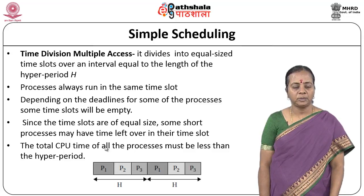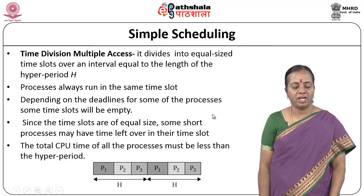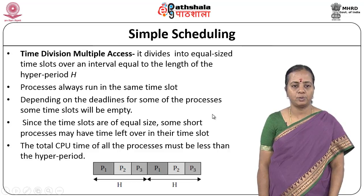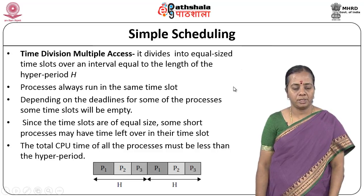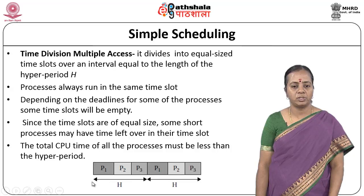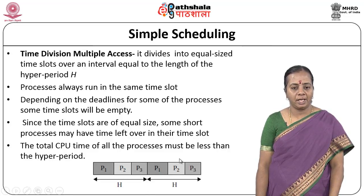When looking at simple scheduling, first we have to see how scheduling is done. One simple scheduling algorithm used by the OS is Time Division Multiple Access — TDMA. Here, if there are three processes or tasks, the entire time is divided into equal time slots which is otherwise called a hyper period. Within one hyper period, if three tasks exist, the hyper period is divided into equal time slots and each slot is allotted to one task.